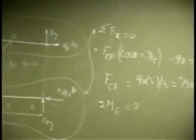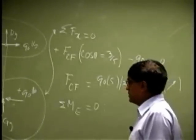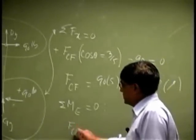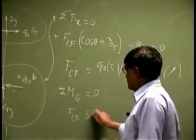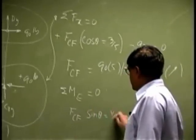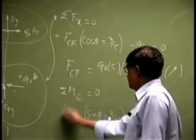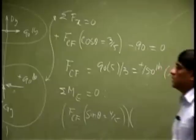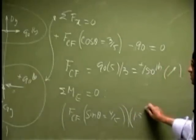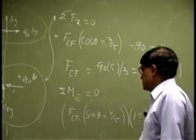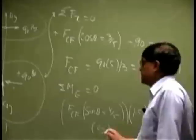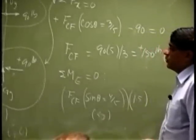So if I need to write that equation, we get Fcf sin theta which is 4 fifth. So the distance is 1.5 and the directional sense is counter-clockwise.